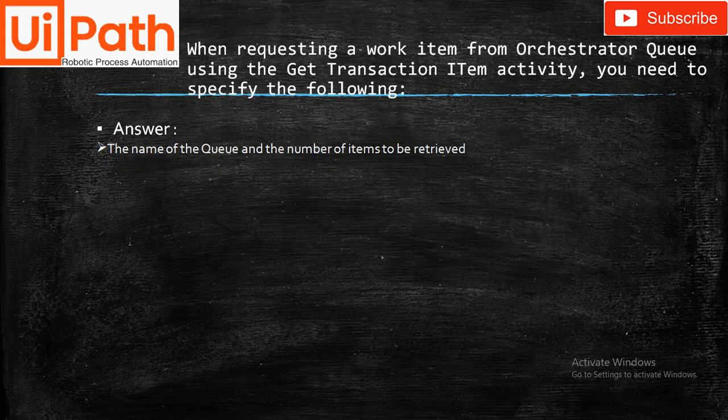When requesting a work item from an Orchestrator queue using the Get Transaction Item activity, you need to specify the following: the name of the queue and the number of items to be retrieved.